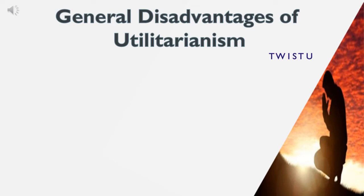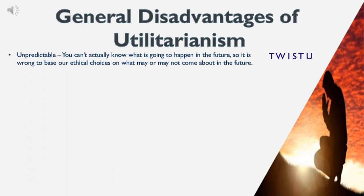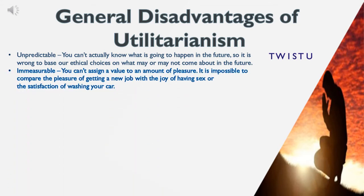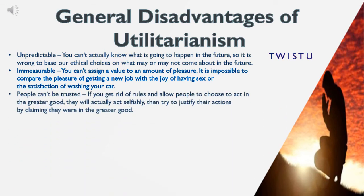General disadvantages of utilitarianism. Unpredictable — you cannot actually know what is going to happen in the future, so it is wrong to base our ethical choices on what may or may not come about. Immeasurable — you cannot assign a value to an amount of pleasure; it is impossible to compare the pleasure of getting a new job with the joy of having sex or the satisfaction of washing your car. People can't be trusted — if you get rid of rules and allow people to choose to act in the greater good, they will actually act selfishly, then try to justify their actions by claiming they were in the greater good.